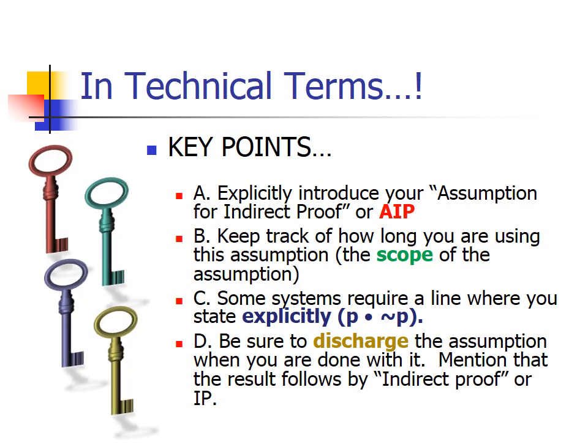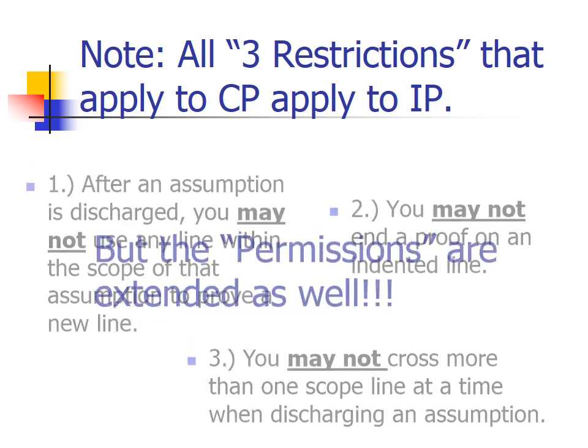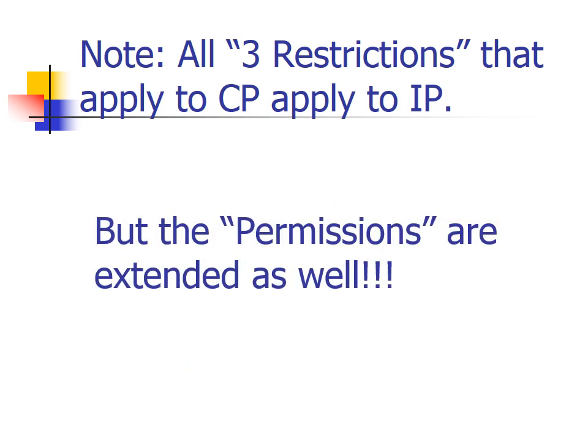The basic idea here is the same as conditional proof: introduce your assumption, make your jump within the scope, and once you've made your jump, discharge the assumption — in this case the assumption for indirect proof. In technical terms: explicitly introduce your assumption for indirect proof; keep track of how long you're using this assumption; some systems require you to have a line where you state explicitly that some statement of the form P and tilde P has been proven. Be sure to discharge the assumption when you're done, mentioning that your result followed by indirect proof. All the restrictions that applied to conditional proofs apply to indirect proofs, but the permissions are extended as well.